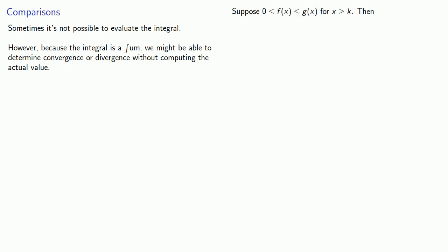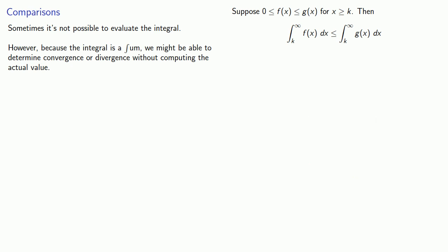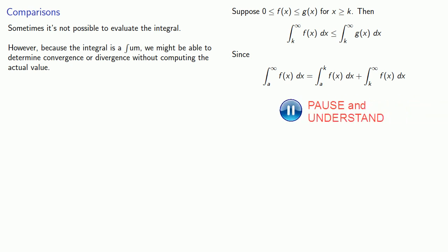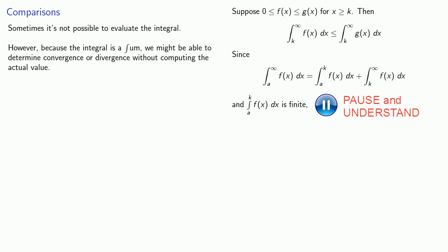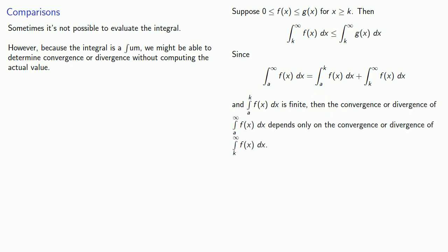Suppose 0 ≤ f(x) ≤ g(x) for x greater than or equal to some value k. Then the integral from k to infinity of f(x) should be less than or equal to the integral from k to infinity of g(x). Since the integral from a to infinity of f(x) is the integral from a to k of f(x) plus the integral from k to infinity of f(x) dx, and the integral from a to k is finite, then the convergence or divergence of the integral from a to infinity depends only on the convergence or divergence of the integral from k to infinity.